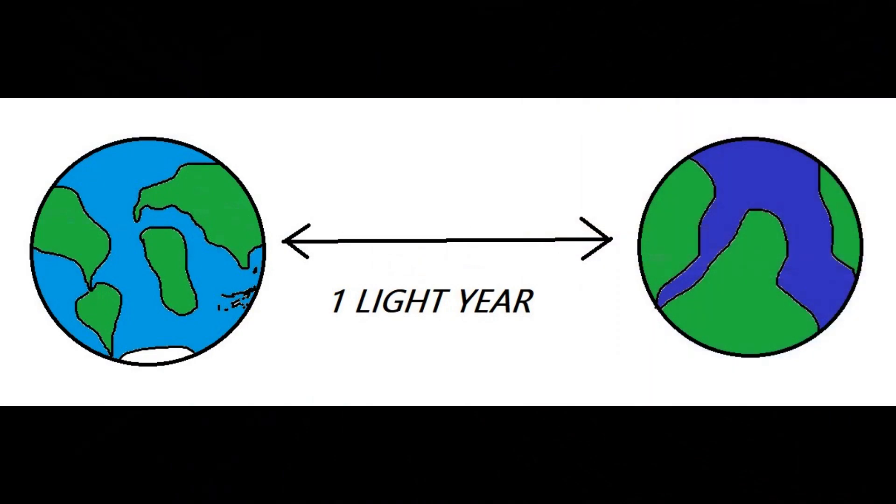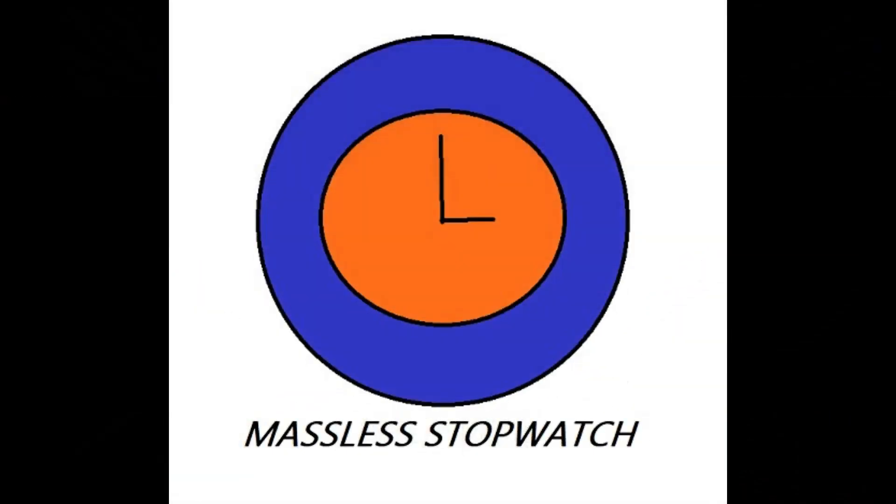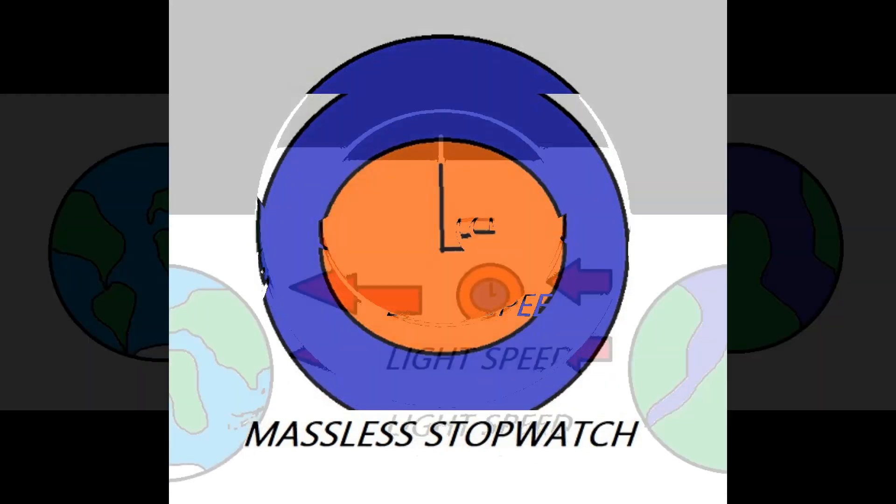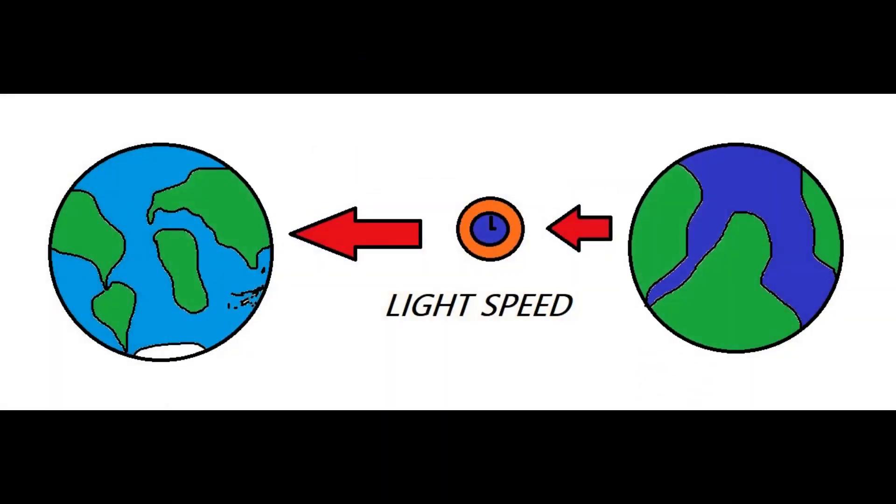Now check this out. You are on a planet one light year away from Earth and you build a massless stopwatch there. Then you turn it on and shoot it towards Earth at the speed of light.